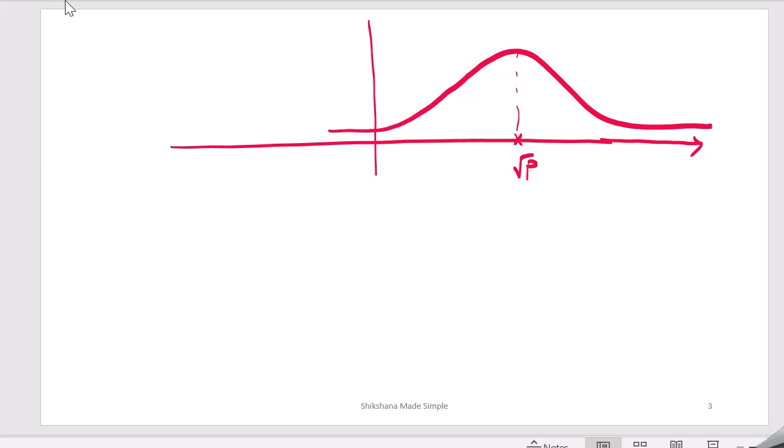So similarly if we have minus P we will have one more Gaussian PDF present at this point.